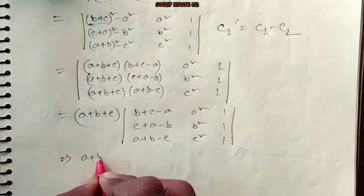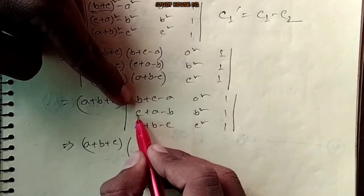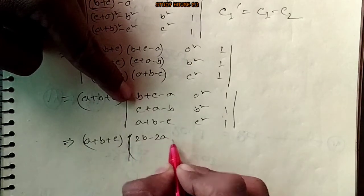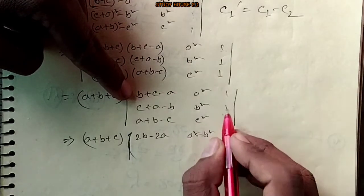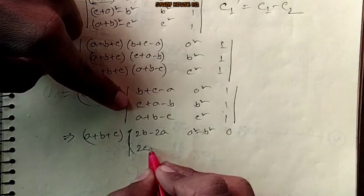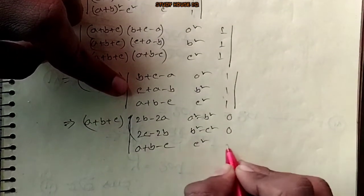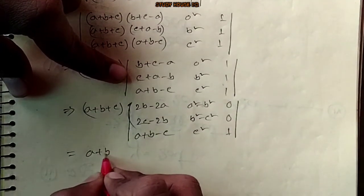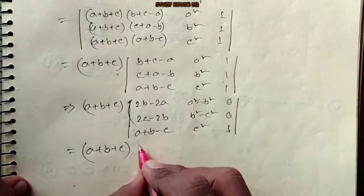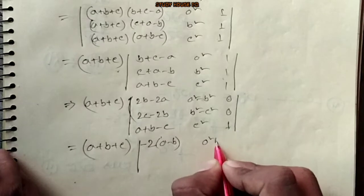If you find number one, let's analyze number 2. We have c minus 2b and we have b squared minus c squared equals 0, and we have to write a plus b plus c.